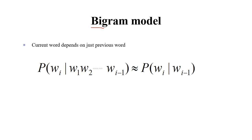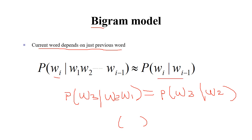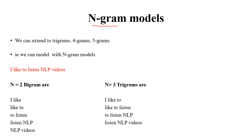In the bigram model, the probability of the current word depends on just the previous word: P(W3 | W2, W1) is approximated as P(W3 | W2). We consider a pair of two words: W(i) given W(i-1). In general, the N-gram model can be extended to trigrams, 4-grams, 5-grams, and so on.